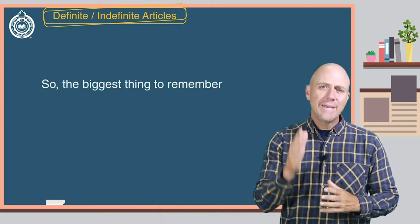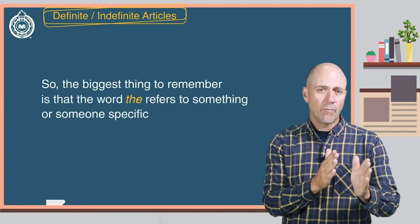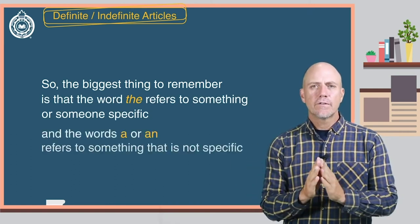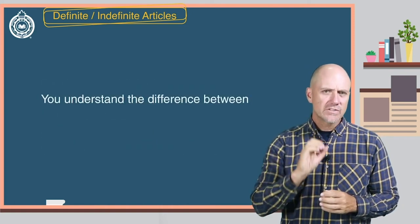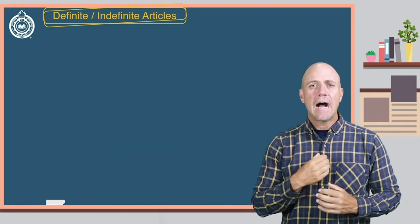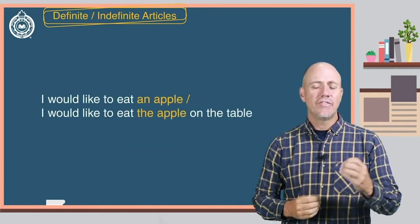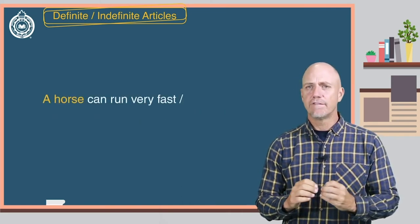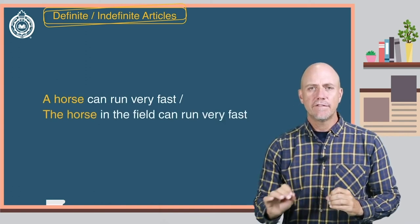So the biggest thing to remember is that the word the refers to something or someone specific, and the words a or an refer to something that is not specific. Do you understand the difference between the following sentences? I would like to eat an apple, or I would like to eat the apple on the table. A horse can run very fast. The horse in the field can run very fast.